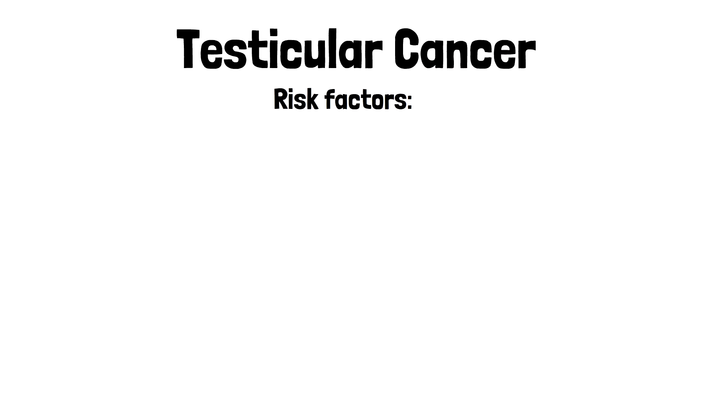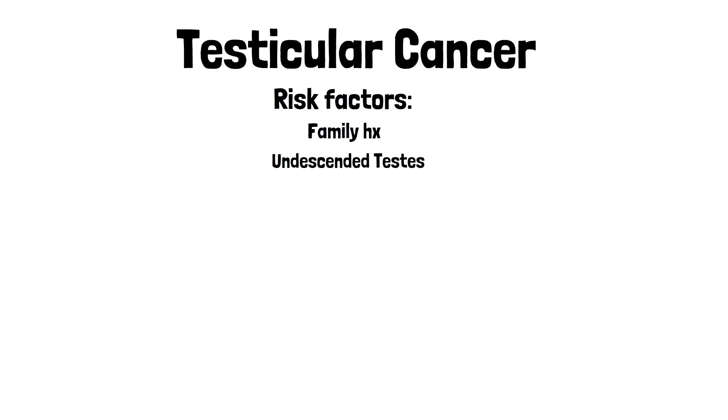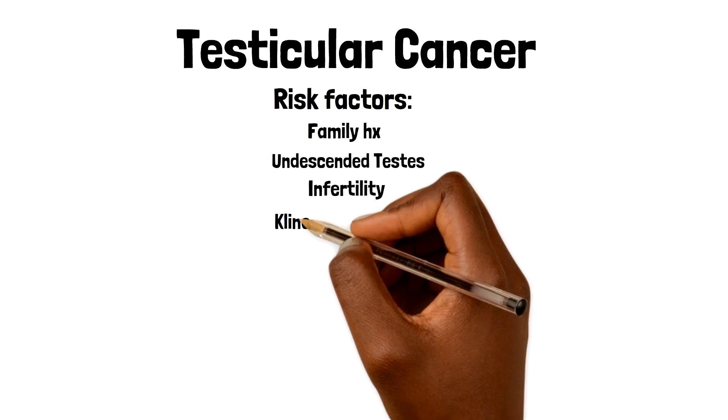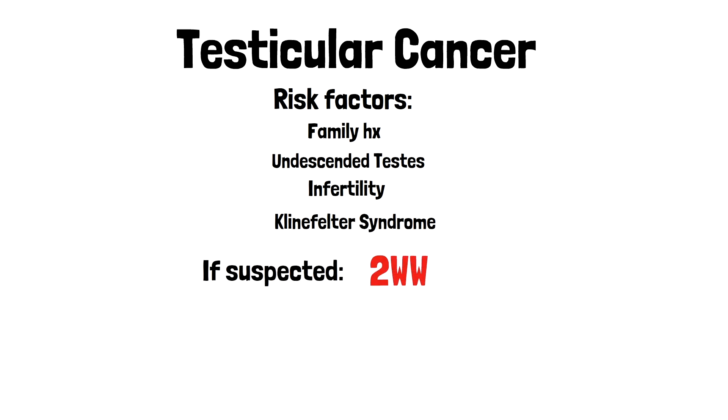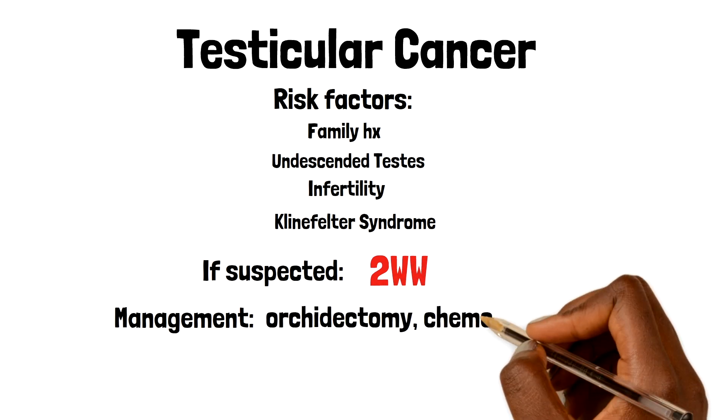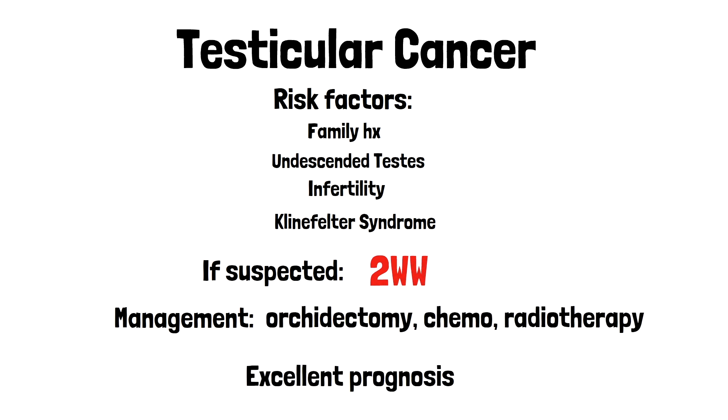Let's wrap today's video up by looking at testicular cancer. This tends to present in relatively young males between the ages of 18 and 40. These patients mostly present with a painless testicular lump, but in a small subset there may be a dragging sensation in the testicle. There may also be associated symptoms such as gynaecomastia, a hydrocele, and associated lymphadenopathy. Risk factors include a family history, undescended testes, infertility, and conditions such as Klinefelter's syndrome. If a tumour is suspected, these patients should be referred via the two-week-wait pathway. Management involves orchidectomy, chemotherapy, or radiotherapy. The prognosis is excellent.